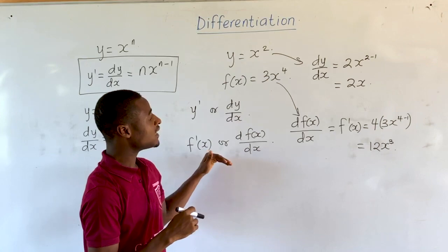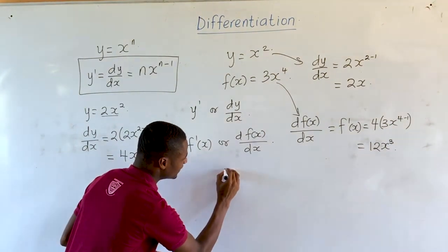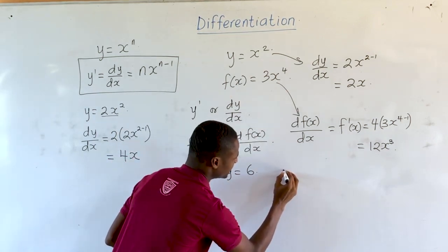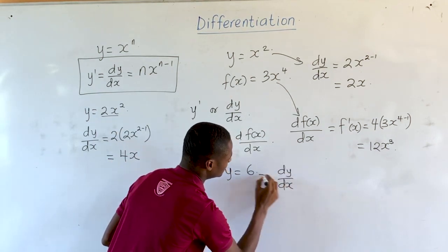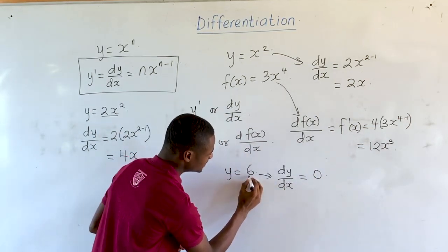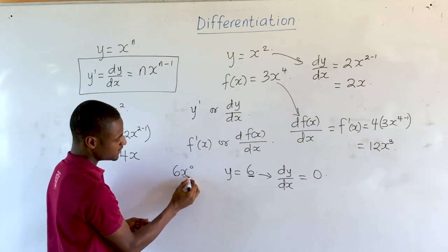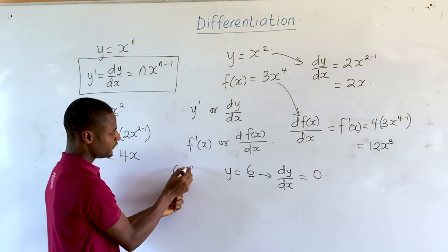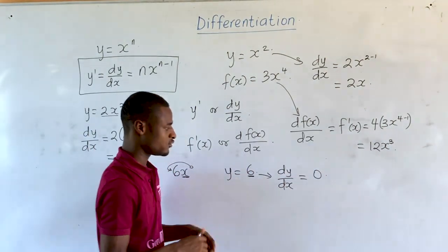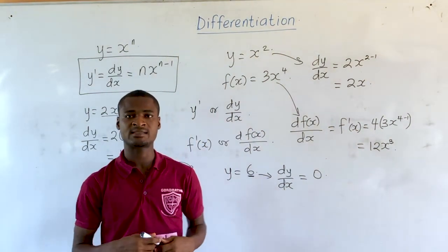Note that the differential of a constant is always 0. For example, if we have the function y is equal to 6, then dy/dx is equal to 0. This is because the number 6 is the same as 6x raised to the power 0, where x to the power 0 gives us 1. So if we multiply the whole function by the power 0, it all goes down to 0. The derivative of a constant is always 0.